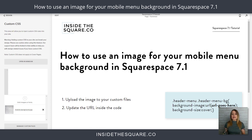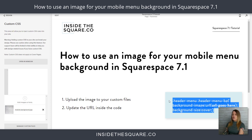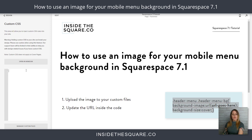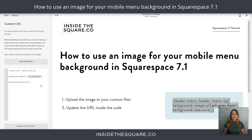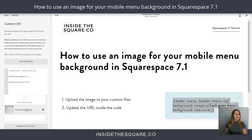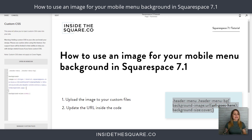The next thing we need to do is take this code, which is listed in the description below, and paste it into our Custom CSS. Right here where it says "URL goes here," I'm going to remove that line, open up my custom files, and just click on that image. Squarespace is going to put that URL in there for me.